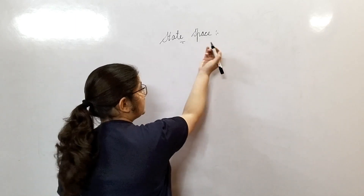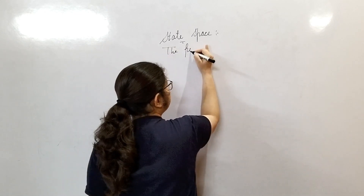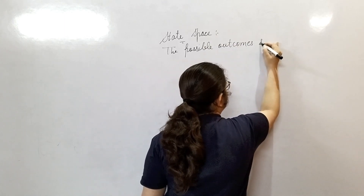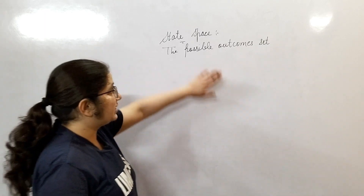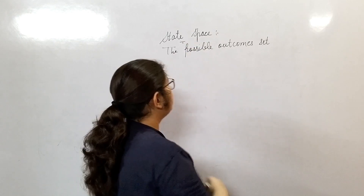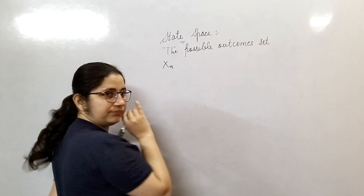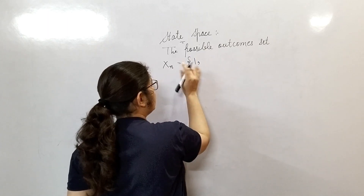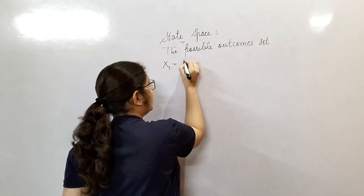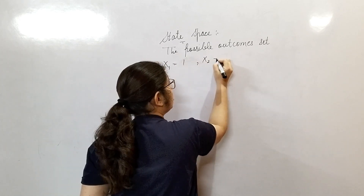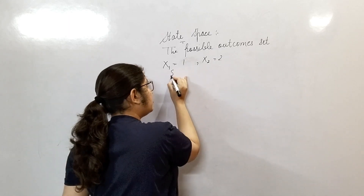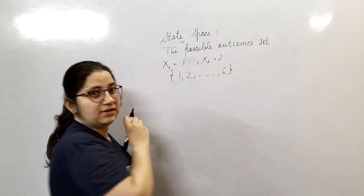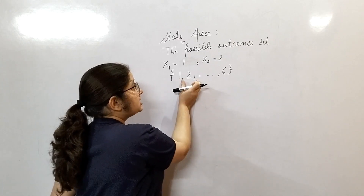Now, what is the state space? The state space in a stochastic process is the set of possible outcomes. The set of possible outcomes of a random variable is called the state space. For example, if I throw a die, the possible outcomes are from one to six. It may happen that in the first throw one comes, in the second throw two comes, in the third throw three comes. So the set of possible values of the random variable xn is {1, 2, 3, 4, 5, 6}. These six possible values of the random variable xn are called the state space.